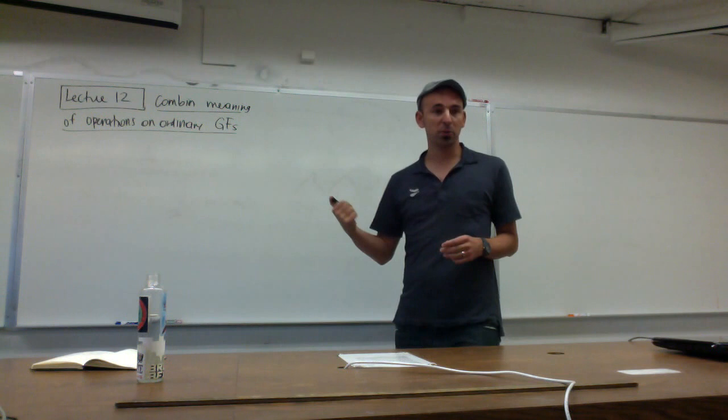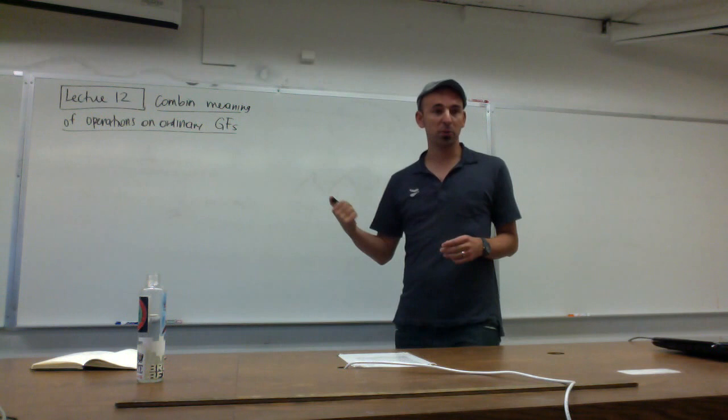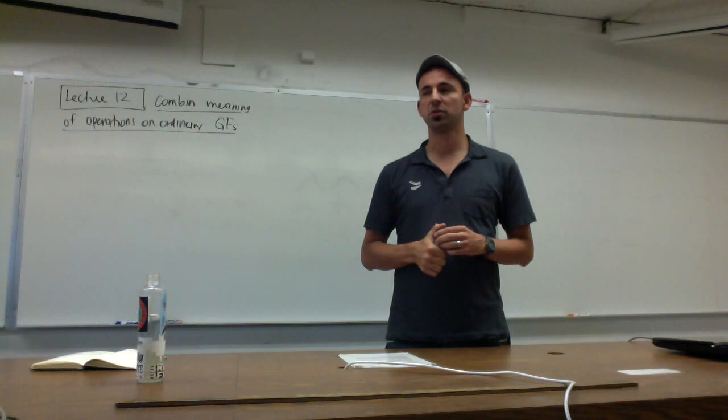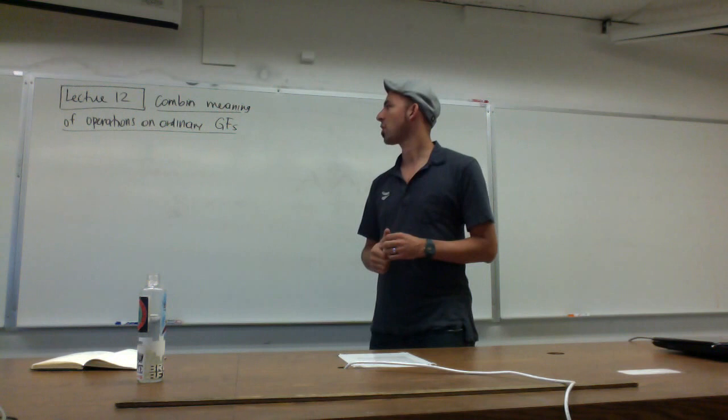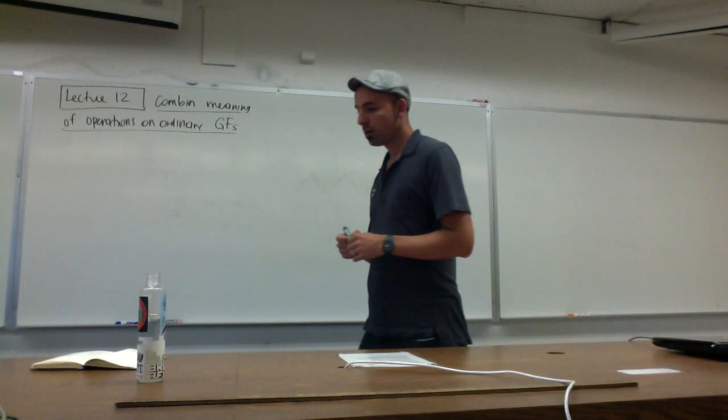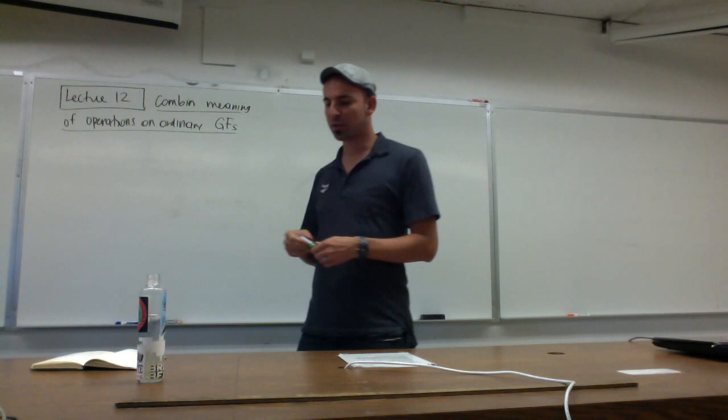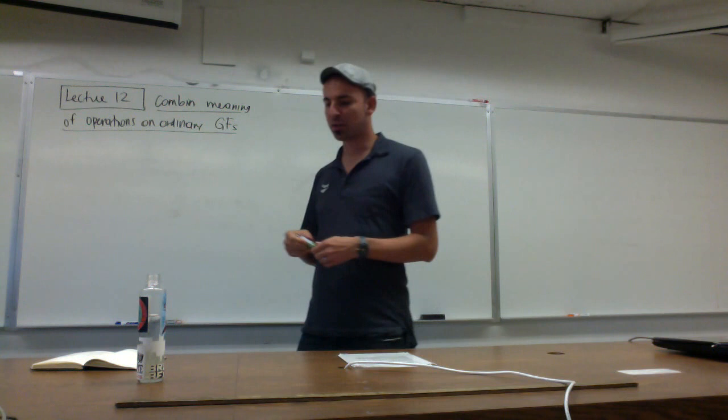What I'm going to talk about today is not written in the book this way. I'm using partly the book by Flajolet and Sedgewick on analytic combinatorics, and there are other treatments I may post on the course blog. Let me start by introducing some formalisms — I think everything will become clear when we talk about examples. Let me define a combinatorial class of objects.